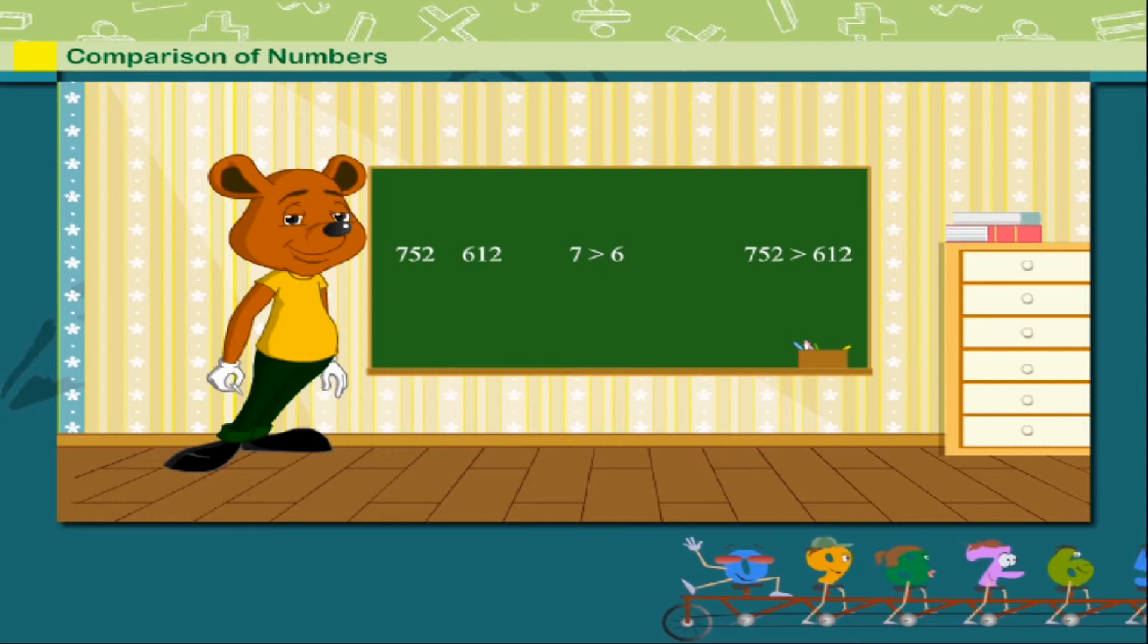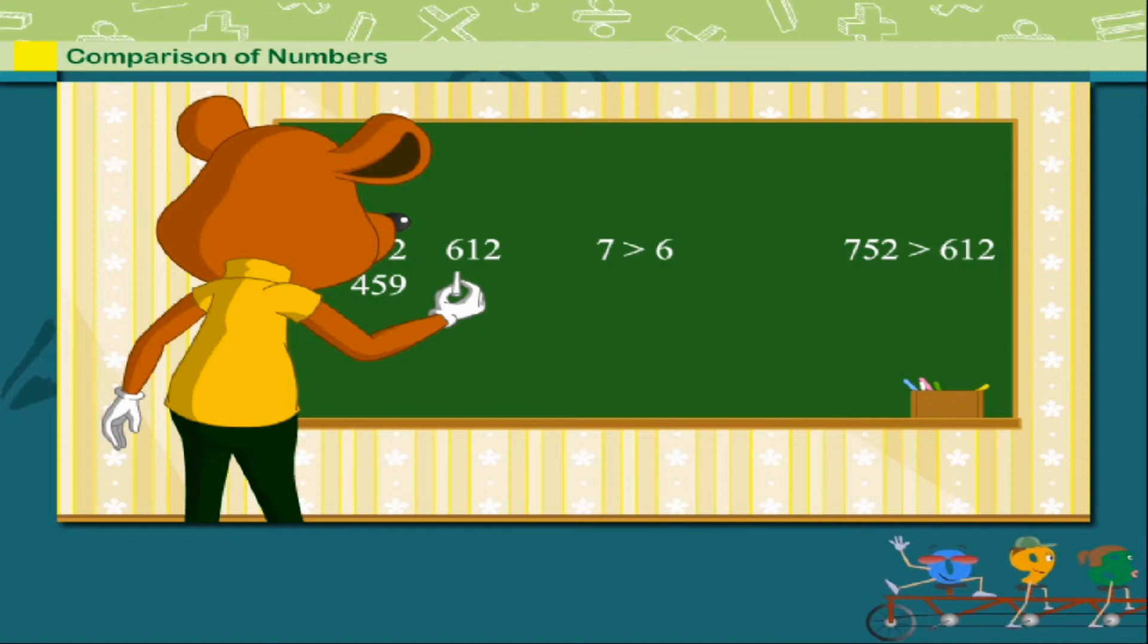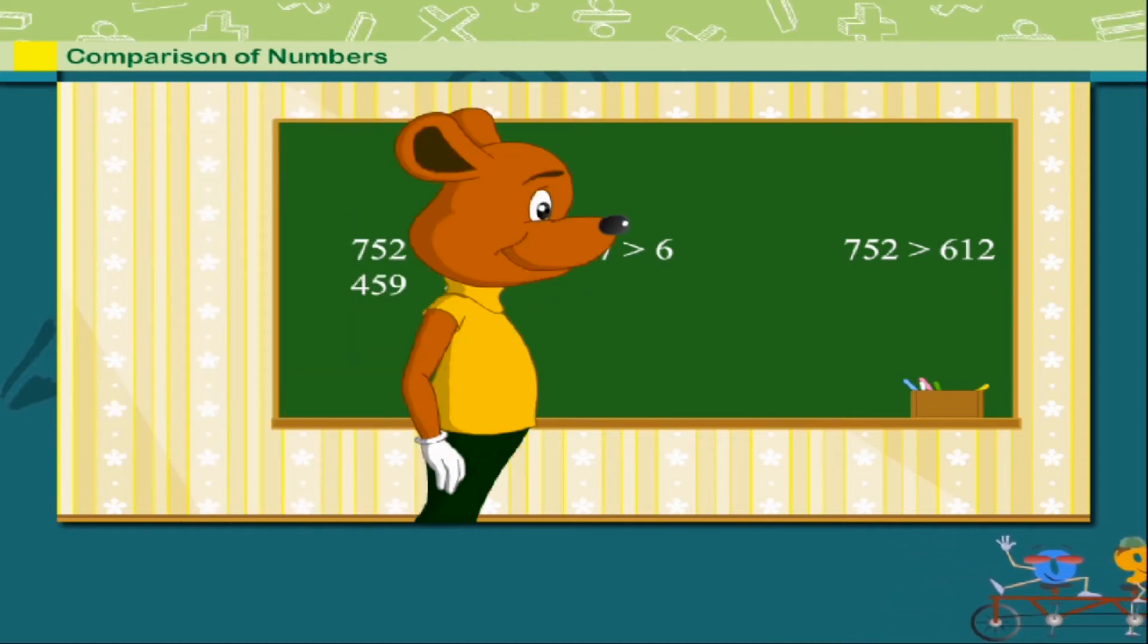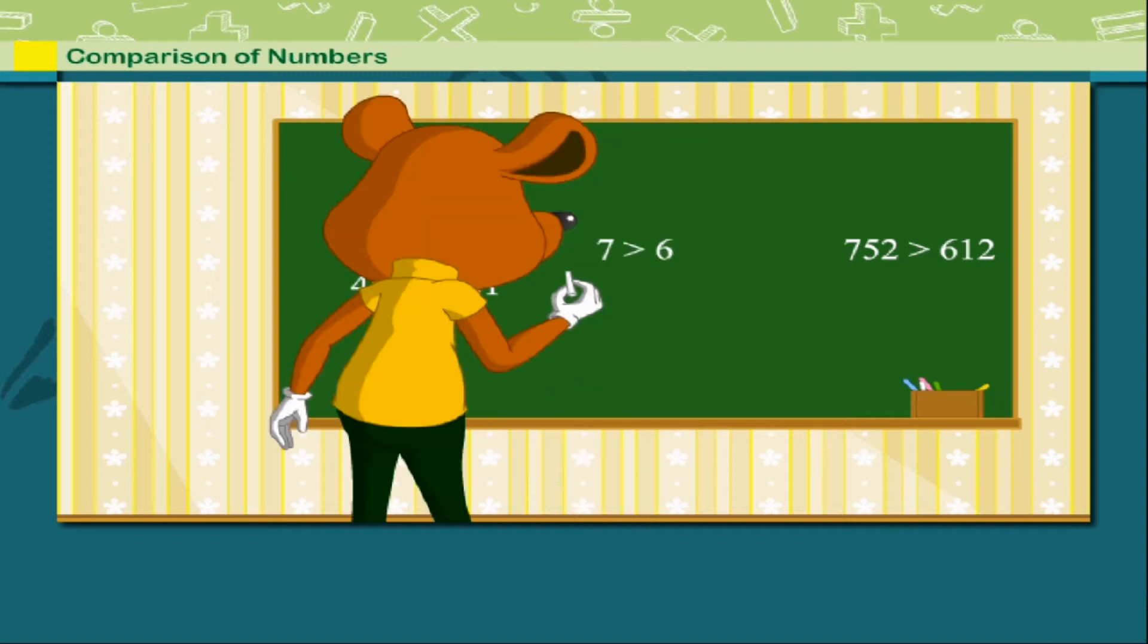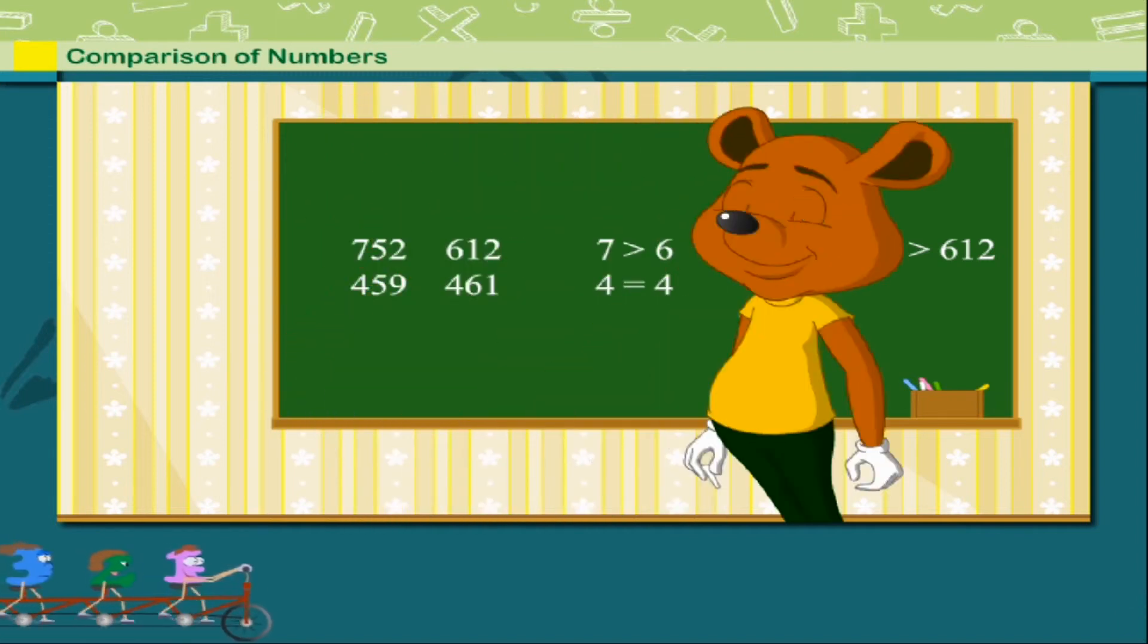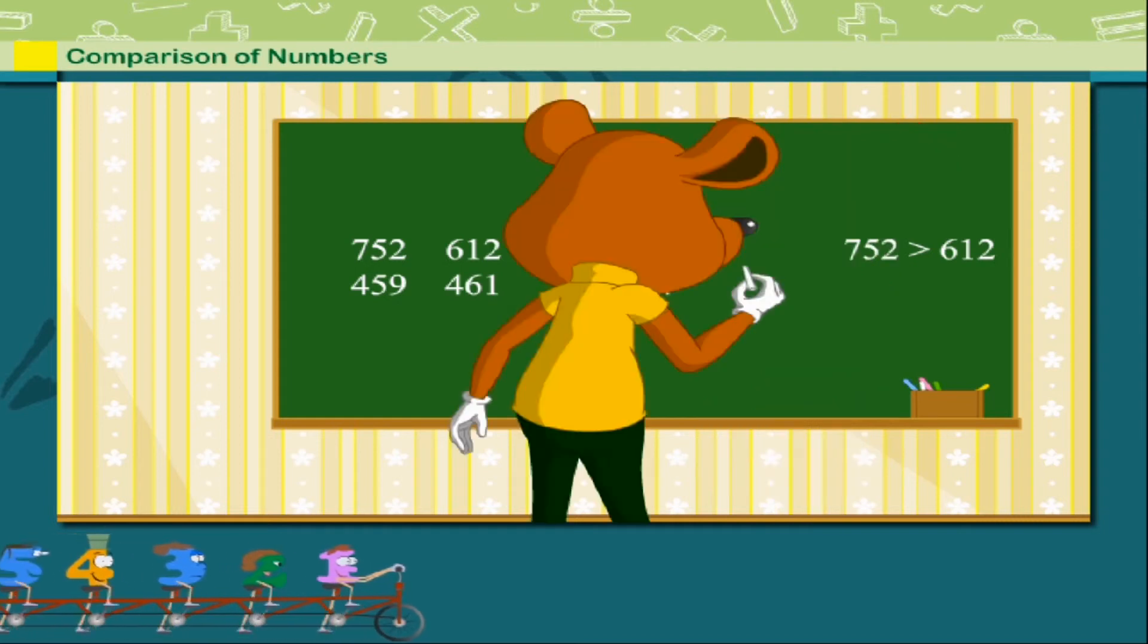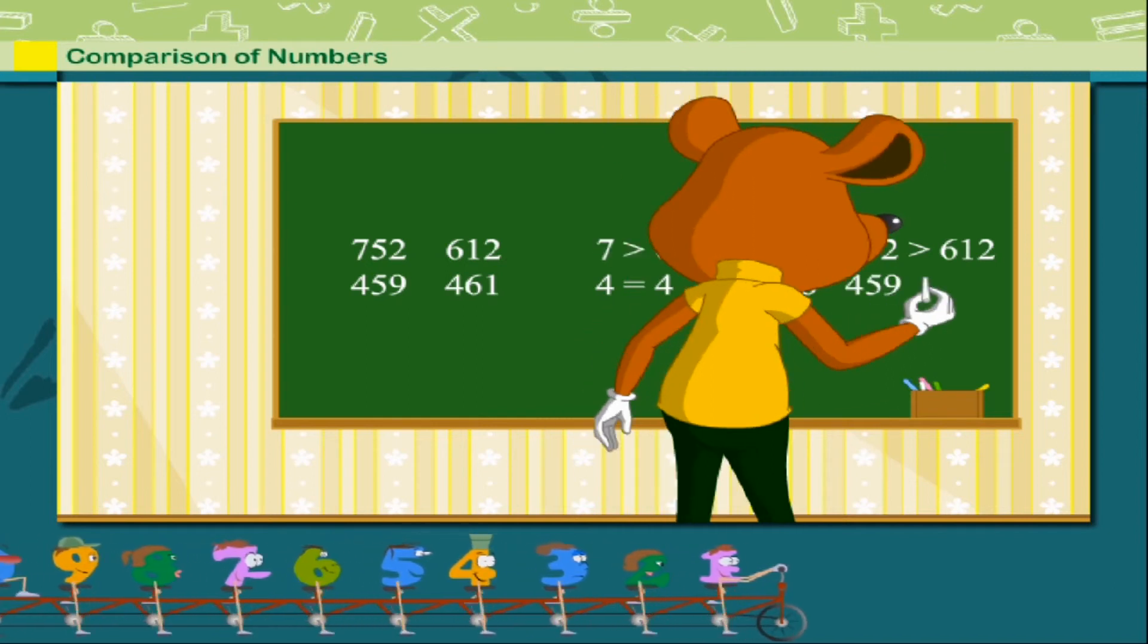His next set of numbers is four hundred and fifty-nine and four hundred and sixty-one. Toby compares the hundreds. Four is equal to four. So, he compares the tens. Five is less than six. So, four hundred and fifty-nine is less than four hundred and sixty-one.